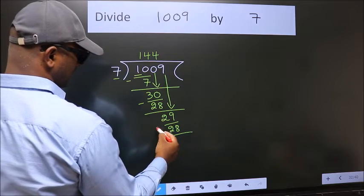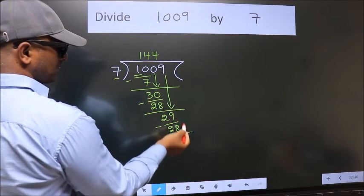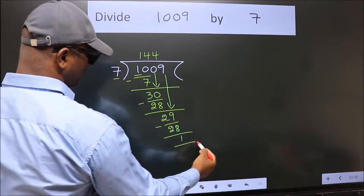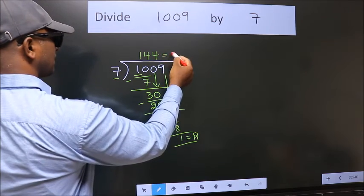Now we subtract. We get 1. No more numbers to bring it down. So we stop here. This is our remainder. This is our quotient.